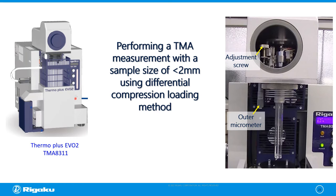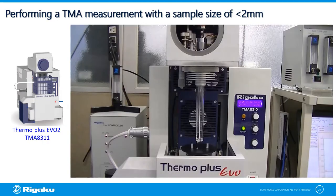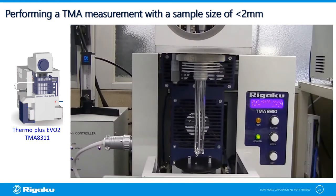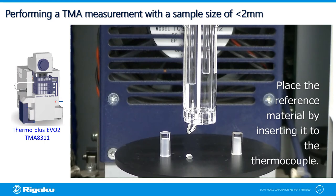In the next video, we will show how to perform a measurement with a sample length of less than 2 mm using the compression loading method. By using a sample stage of 10 mm in length, you can measure samples with less than 2 mm in length. It is ideal that the total sample length including the sample stage is nearly the same as that of the reference material. In this case, we use the 11 mm reference material.